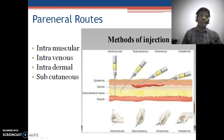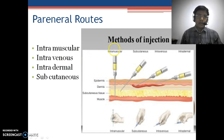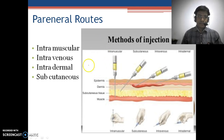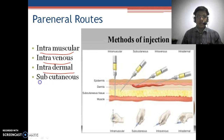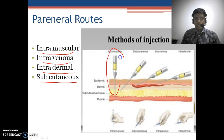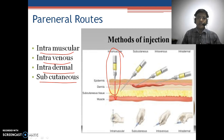When we talk about the parenteral route, these are the routes apart from oral in which the drug gives a systemic effect — intramuscular, intravenous, intradermal, and subcutaneous. For the intramuscular route, using a syringe needle, the drug is administered deep into the tissue and directly into the muscle.